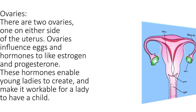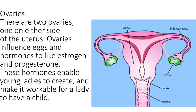Ovaries. There are two ovaries, one on either side of the uterus. Ovaries produce eggs and hormones like estrogen and progesterone. These hormones enable young ladies to develop and make it possible for a lady to have a child. The ovaries discharge an egg as part of a lady's cycle. When an egg is discharged, it's called ovulation.